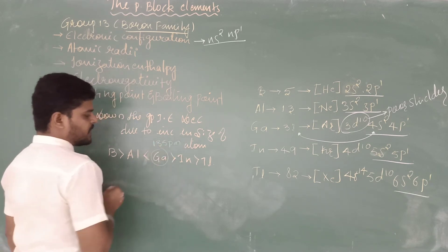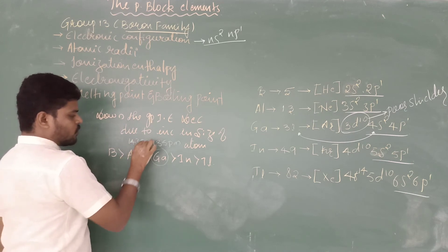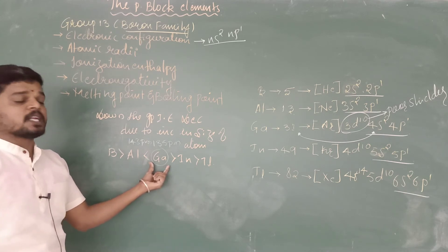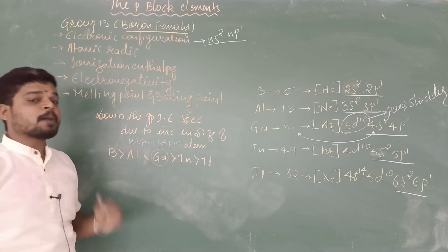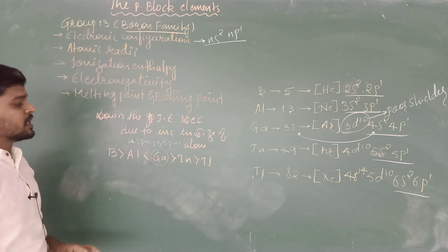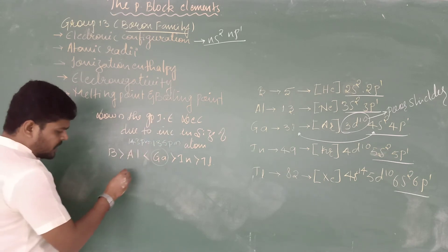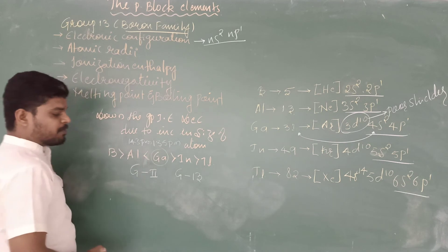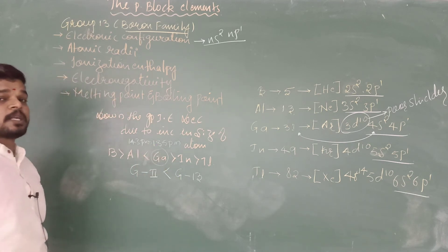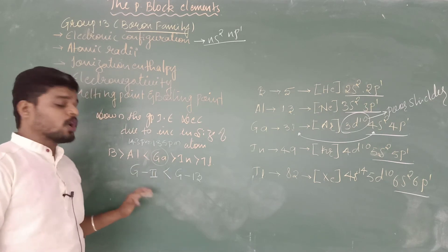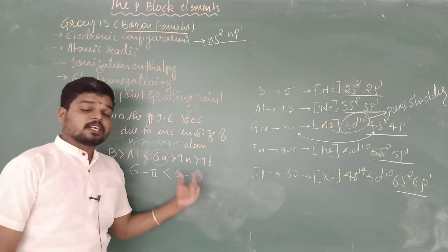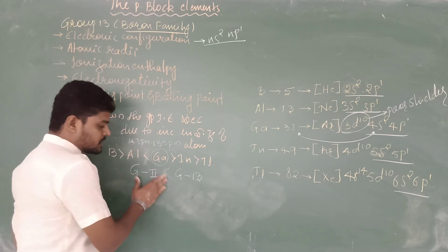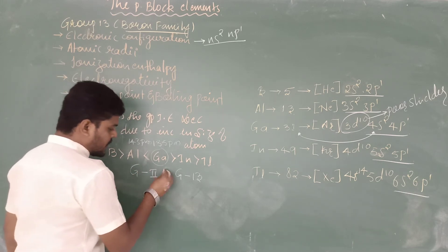Again, there is an exception between gallium and aluminium. Gallium has a smaller size of around 135 picometres compared to aluminium at 143 picometres, due to the poor shielding effect of d orbital electrons. Therefore, the ionization enthalpy of gallium is slightly higher than expected compared to aluminium.